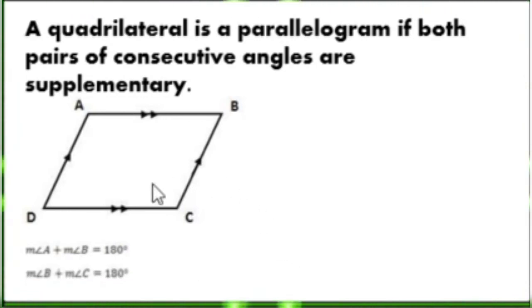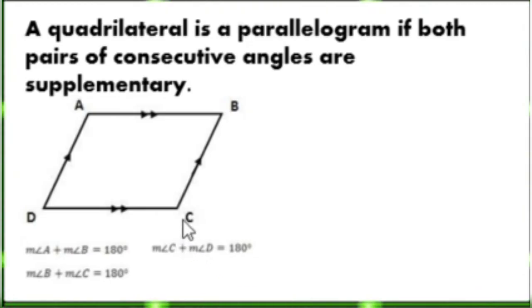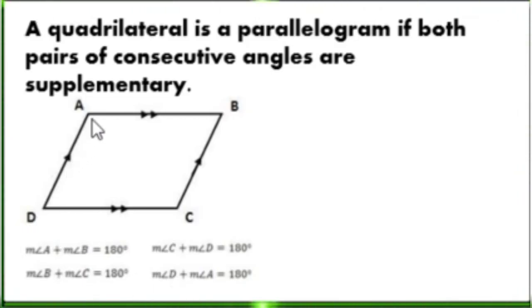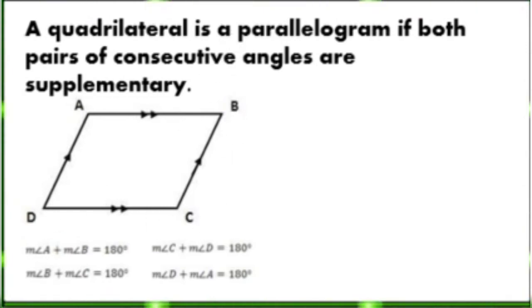The measurement of angle B plus the measurement of angle C is 180 degrees. The measurement of angle C plus the measurement of angle D is also 180 degrees. The measurement of angle D plus the measurement of angle A is also equal to 180 degrees. Therefore, quadrilateral ABCD is a parallelogram.